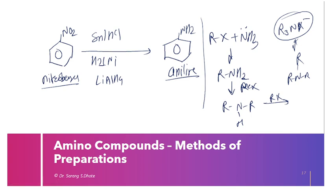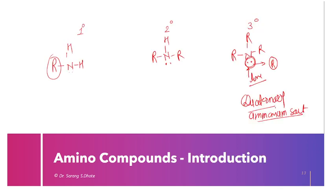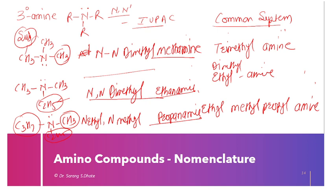So today we have discussed the basic character of amino compounds, including: primary, secondary, and tertiary amines and which is most basic; comparison of aromatic versus aliphatic amines; a few reactions; and nomenclature. That is all for today's lecture. We will continue in the next session.